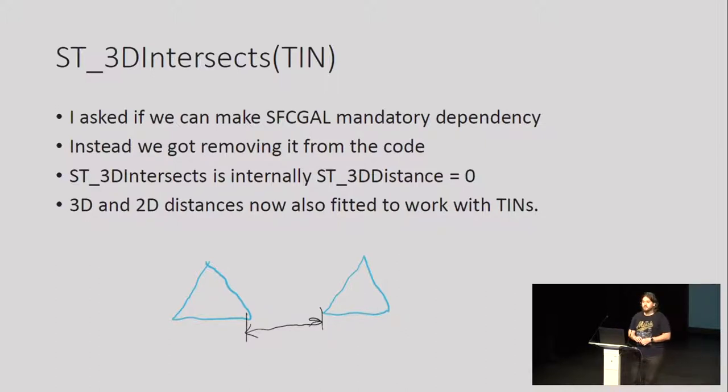Another thing: we removed SFCGAL clones of functions that were available in GEOS in PostGIS 3. One of them was 3D intersects, which internally used a GEOS back-end — it was actually a distance implementation checking that if distance is zero, they are intersecting. I got the distance implementation for TINs working, and after that, if you want to perform measurements on your TIN, it behaves exactly as if they were polygons. You don't need to store your triangles as polygons anymore in PostGIS.